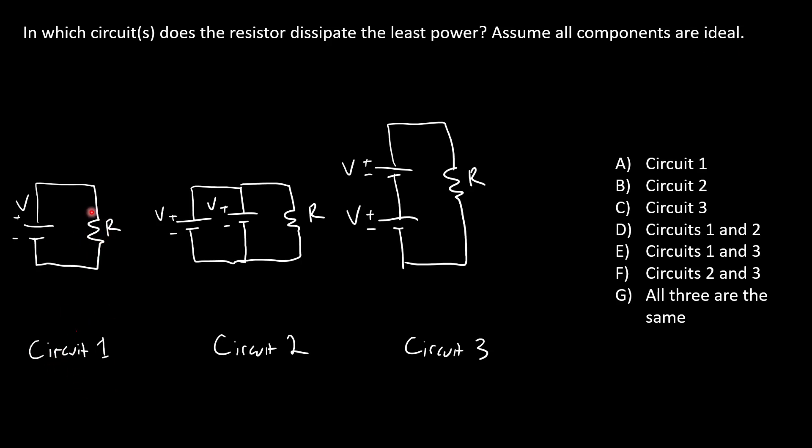Is it circuit one, which just has a single resistor R connected to a battery with voltage V? Is it circuit two, which has a single resistor R connected to two batteries V in parallel? Or is it circuit three, which has a single resistor R connected to two batteries V in series?